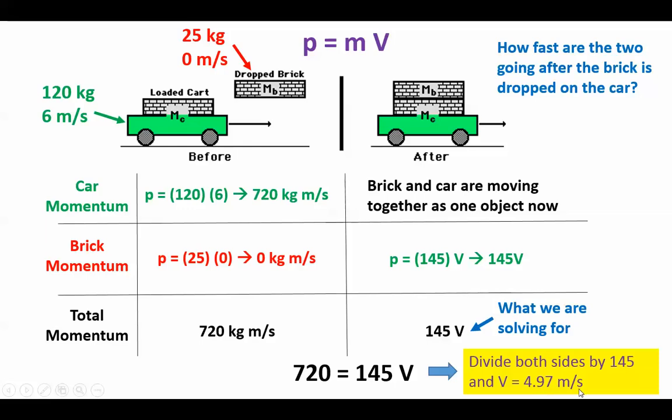Now let's check to just make sure that this makes sense. If it started at 6 meters per second and this brick was just hanging there, it does kind of make sense that if you drop this relatively light brick on top of it, that its velocity should be reduced. And it was by almost one, a little bit more than one meter per second.